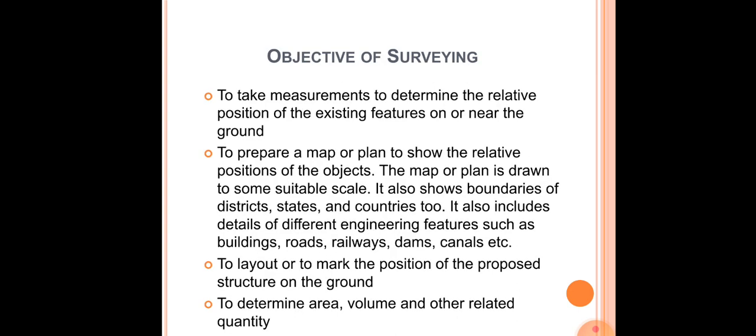What are the various objectives or purposes of surveying? The first objective is to take measurements and to determine the relative position of features on or near the ground. Another objective is to prepare a map or a plan to show the relative position of objects. Whenever we draw a map or a plan, we do it with respect to some suitable scale, reducing the area to a particular scale before plotting it.